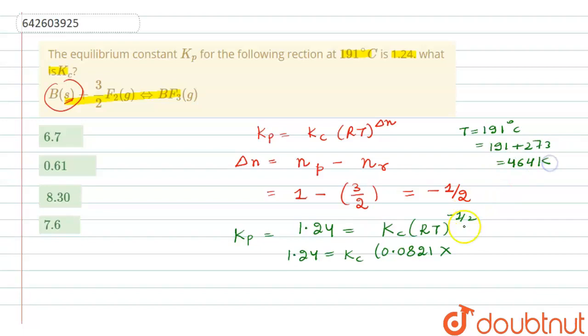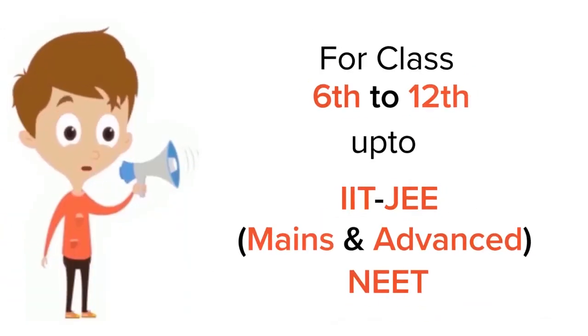So Kc will be 1.24 divided by 0.0821 times 464 raised to the power minus half. When we solve this, the answer comes out to be 7.6. Option D is correct. I hope you get the solution, thank you.